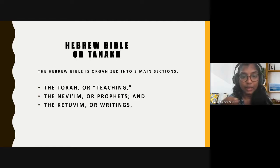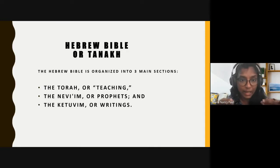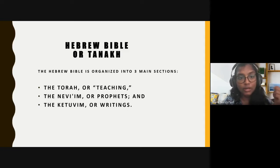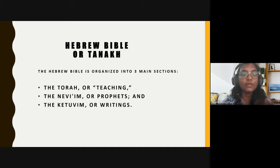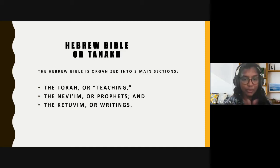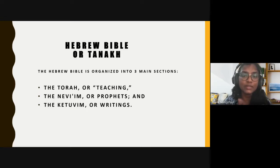Tanakh is spelled T-A-N-A-K-H: 'T' from Torah, 'Na' from Nevim, and 'K' from Ketuvim. This is how they have named the book Tanakh, and each of these three main groups of texts is further subdivided.